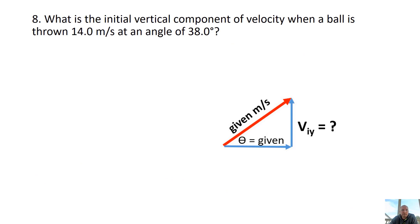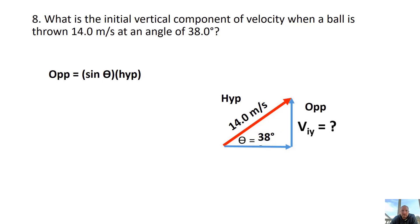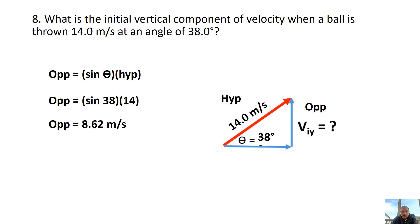Problem 8: What's the initial vertical component of velocity when a ball is thrown at 14 meters per second at an angle of 38 degrees? You need to break the velocity into components. Put the magnitude on the hypotenuse and the 38-degree angle at the origin. You're looking for the opposite side, which uses sine: sine of the angle times the hypotenuse. My answer was 8.62 meters per second.